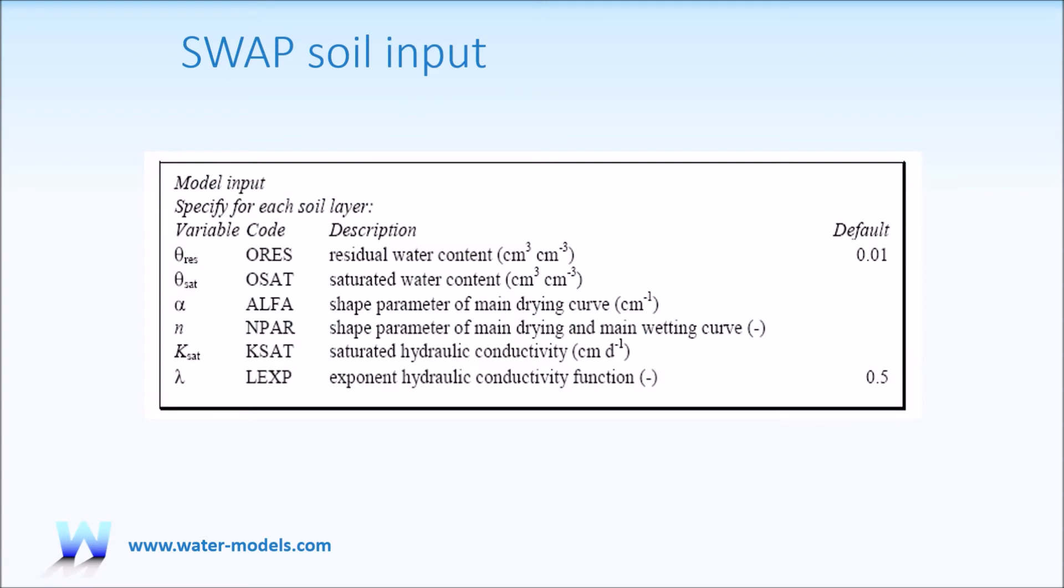Therefore, in summary, the SWAP soil input comprises the residual water content, the saturated water content, the alpha and N parameters of Van Genuchten model, the saturated hydraulic conductivity, and the lambda parameter for the hydraulic conductivity function.